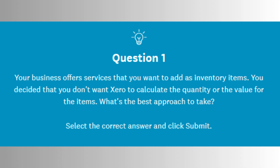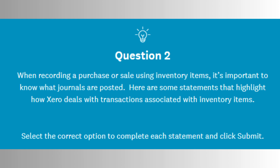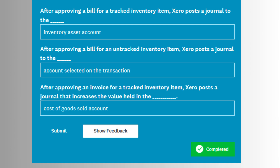First, Explore Products and Services involves navigating the Products and Services page in Xero, where users can view all items in inventory. These items may be tracked or untracked. Tracked items monitor quantities and cost of goods sold, while untracked items are used primarily for invoicing or purchases without stock tracking. The exam may ask how to distinguish between these two types or how to filter the product list.